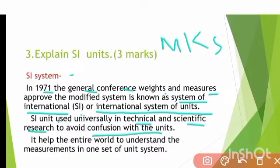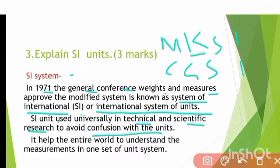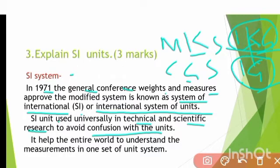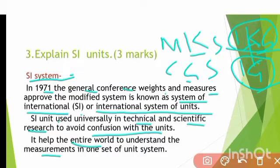For example, in the MKS system, if you say mass is one, it indicates one kilogram. In the CGS system, if you say mass is one, it indicates one gram. Comparing one kilogram and one gram shows a large difference in measurement, so to avoid this confusion we use the SI system, which helps the entire world understand measurement in one unified unit system.